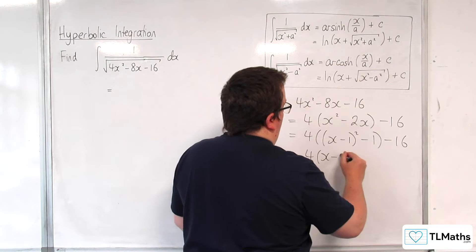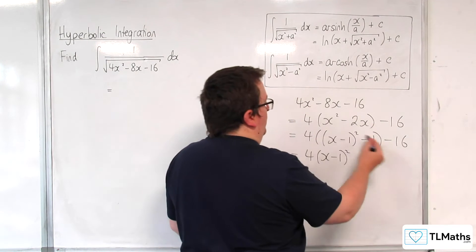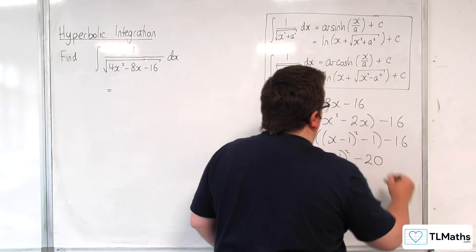So, we have 4 lots of x take away 1 squared. We've got take away 4, take away 16, so take away 20.